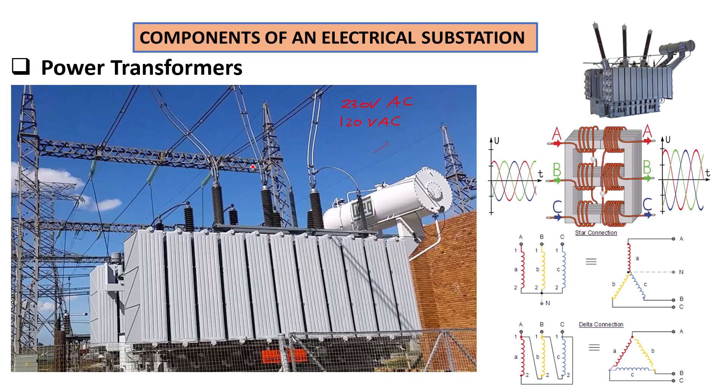If they decide to inject this 400 kilovolt into the distribution network, you know what will happen — because your distribution network is only rated for lower voltages, that will be 66 kilovolt, 33 kilovolt, or 11 kilovolt.